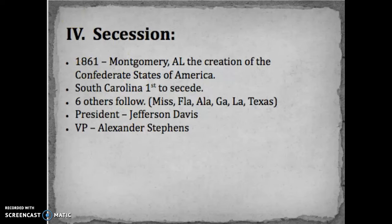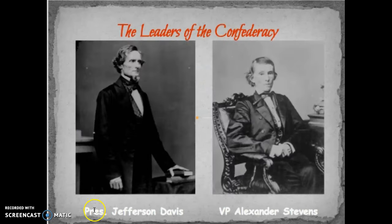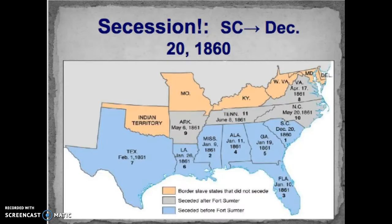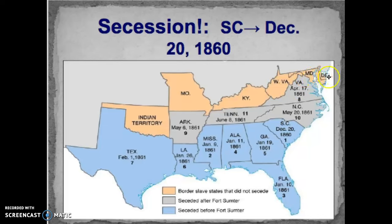The two leaders for the South are President Jefferson Davis and Vice President Alexander Stephens. For the Union, Abraham Lincoln leads the executive branch with Washington DC as the capital. Looking at the secession map, you can see South Carolina seceding first in 1860–1861, followed by other states, with the last four seceding in April, May, and June.